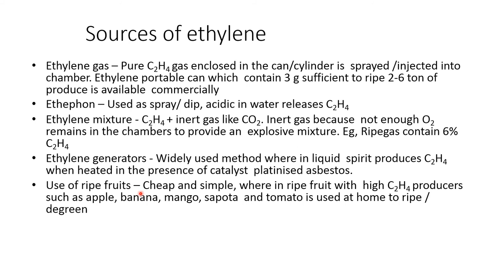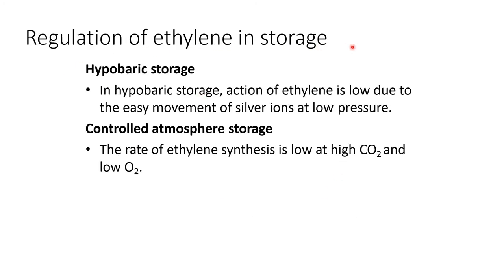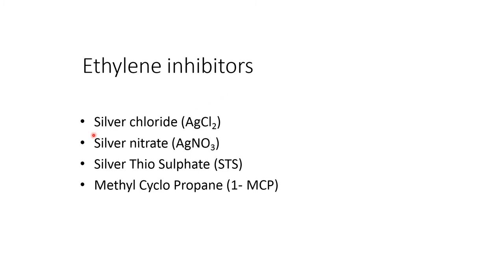Use of ripe fruits: a cheap and simple method where ripe fruits with high ethylene production — such as apple, banana, mango, sapota, and tomato — are used at home to ripen or degreen produce. Removal of ethylene: eliminate the ethylene source, provide proper ventilation, use KMnO4 which oxidizes ethylene gas into carbon dioxide and water, or use brominated or activated charcoal to absorb ethylene. Regulation of ethylene storage: hypobaric storage reduces ethylene action; controlled atmospheric storage reduces ethylene synthesis at high CO2 and low O2. Ethylene inhibitors include silver chloride, silver nitrate, silver thiosulphate, and methyl cyclopropane.